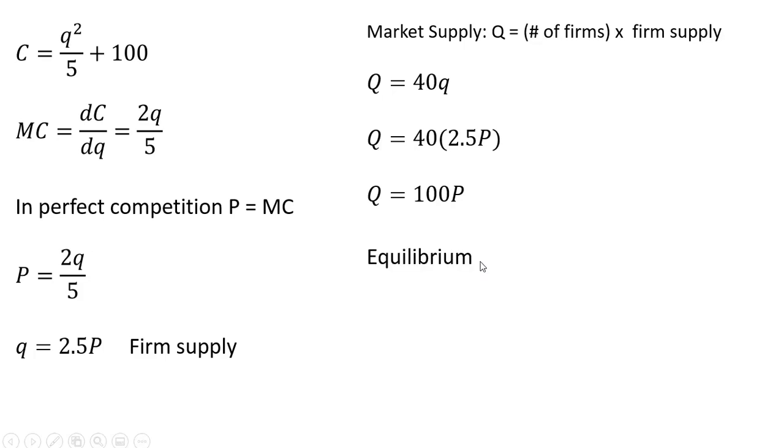Now we're ready to solve for equilibrium in this market. We're going to set the market supply equal to the market demand equation. So quantity demanded equals quantity supplied. There's quantity demanded, and here's quantity supplied. And simplifying, the equilibrium price is $10.